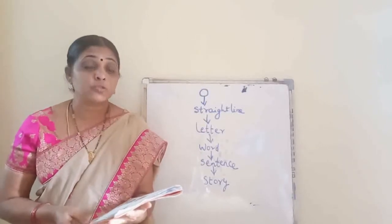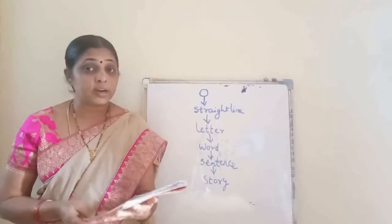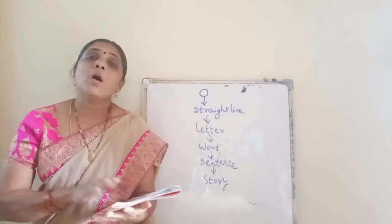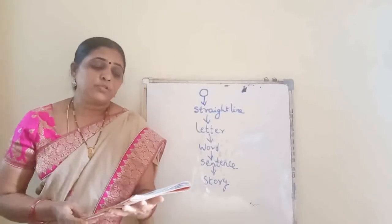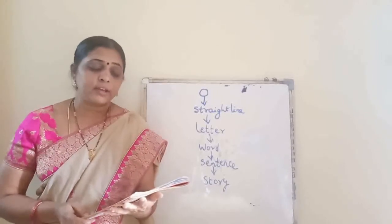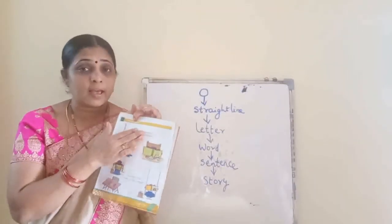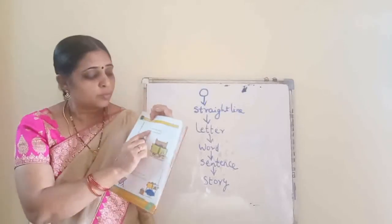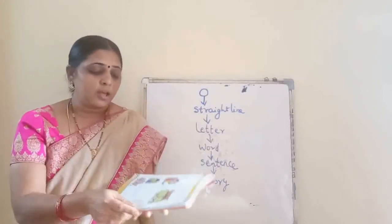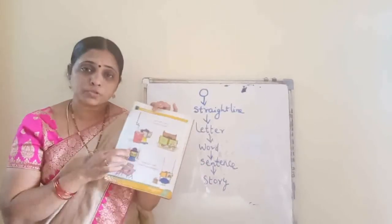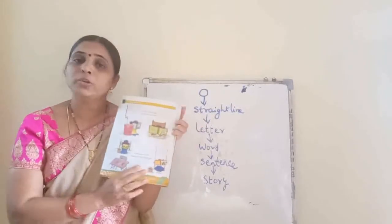Puchku, have a bath. P-U-C-H-K-U. Puchku's mother is telling her: Puchku, have a bath. Puchku, eat your food. Keep your fingers in your book and follow along. Puchku, go to class. Puchku, do your homework. This is Puchku's mother speaking to the girl Puchku.